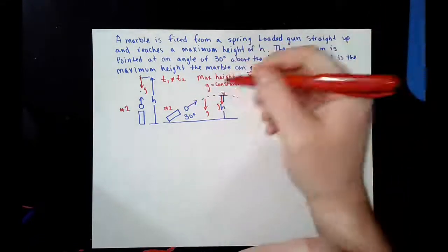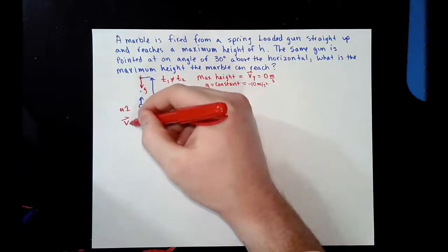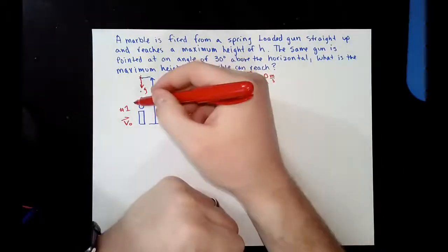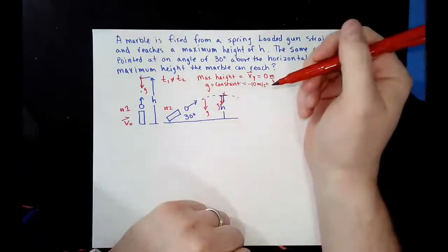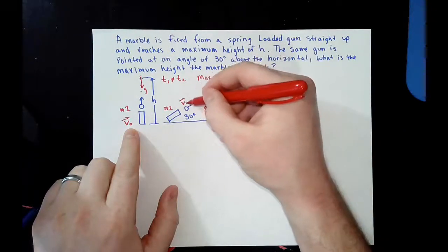But what we do need to know is we need to know how fast the gun launches. So, what is the initial velocity of this launcher? Because that is going to remain constant no matter whatever angle I do. So, we need to find what this velocity initial is. That will be the same.